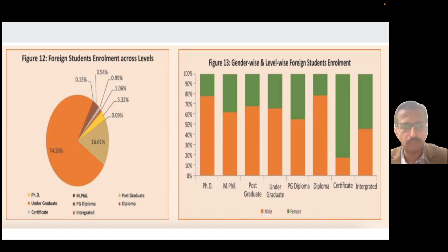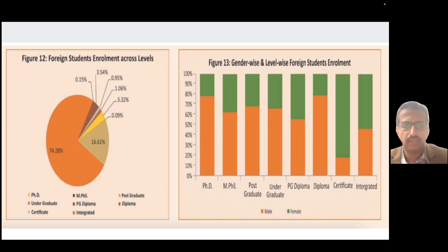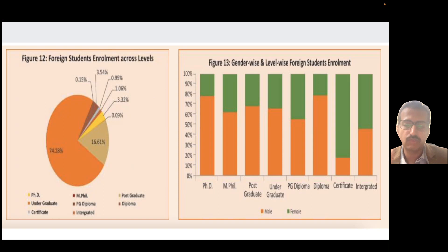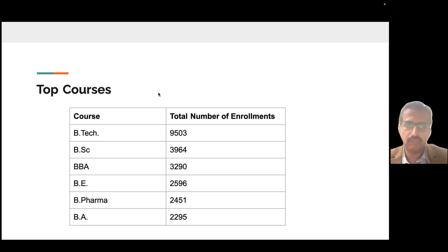Including postgraduate diplomas separately, about 20% come for postgraduate programs, and the rest are for certificate programs, PhD programs, MPhil, and integrated programs. Looking at the gender-wise segregation, mostly male students are coming to India for most programs, apart from certificate programs where more female students enroll. That's an interesting insight into international student mobility to Indian campuses.